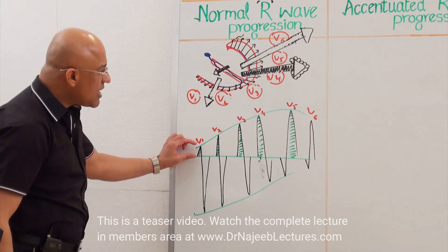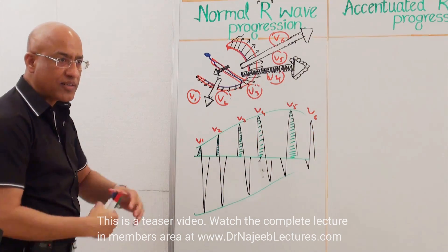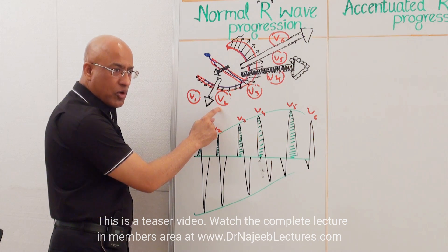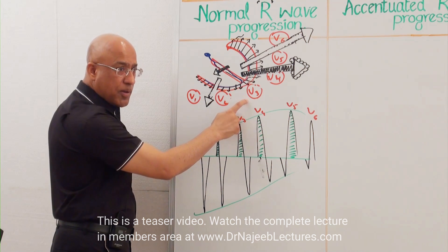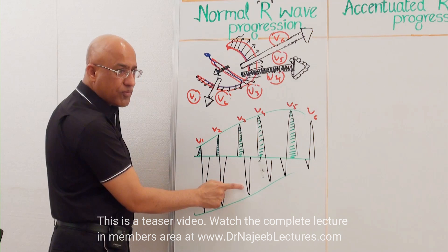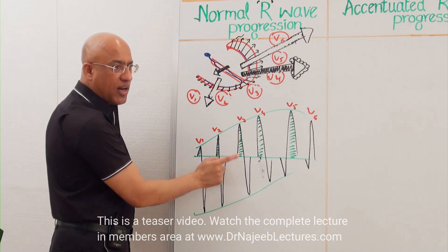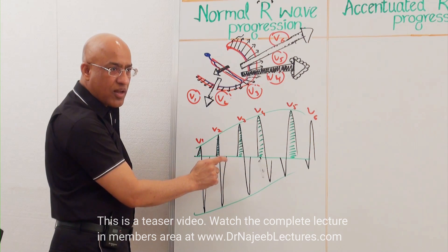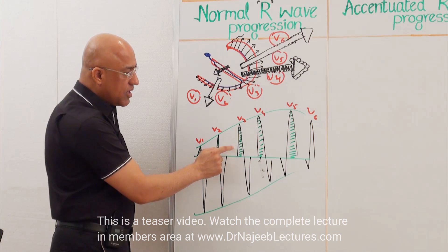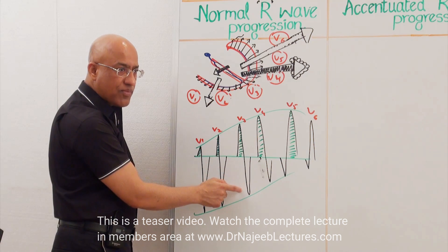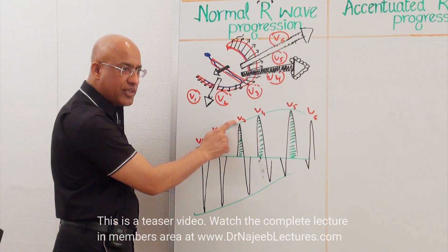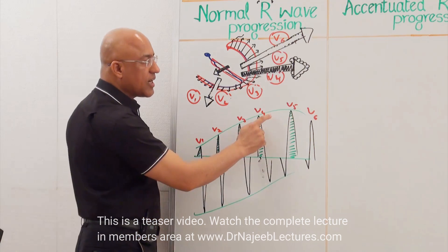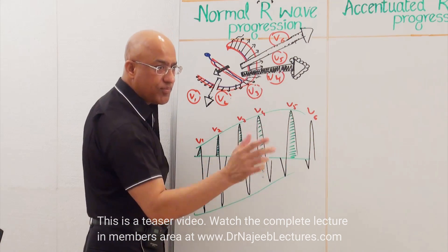If you look only at R-waves in the QRS pattern, V1 has a small R-wave, V2 has a slightly taller R-wave, V3 has an even taller one. Where R-wave and S-wave become equal, we call this the transition zone. In this diagram, the transition zone is V3. Normal transition zone — where R-wave and S-wave are almost equal — usually happens in the V3 or V4 lead. If transition occurs at V2, we say it is early transition; if at V5, we say it is late transition.